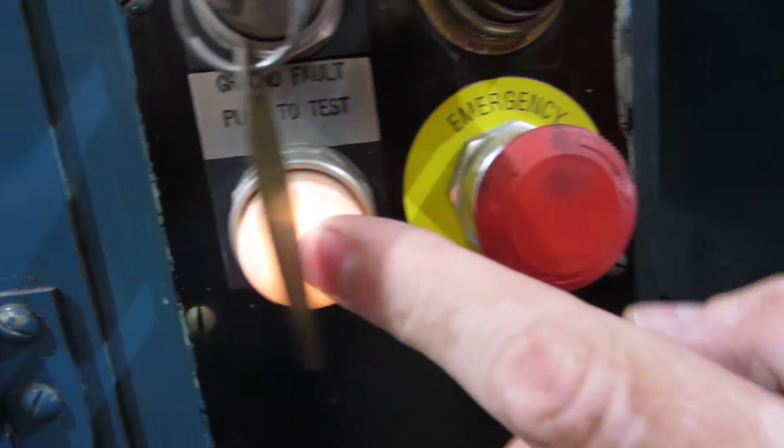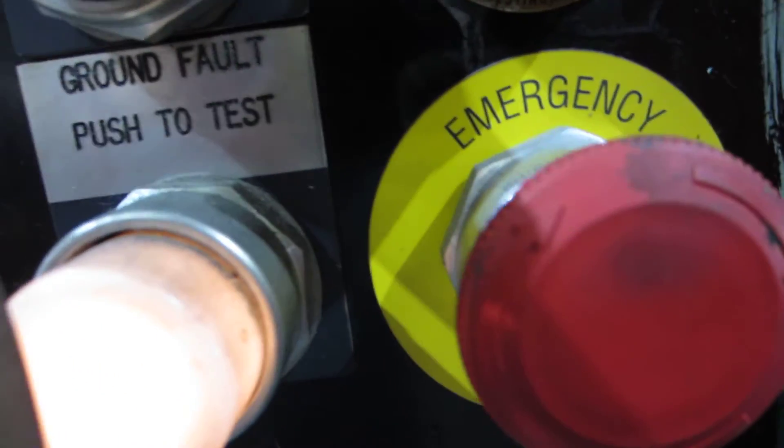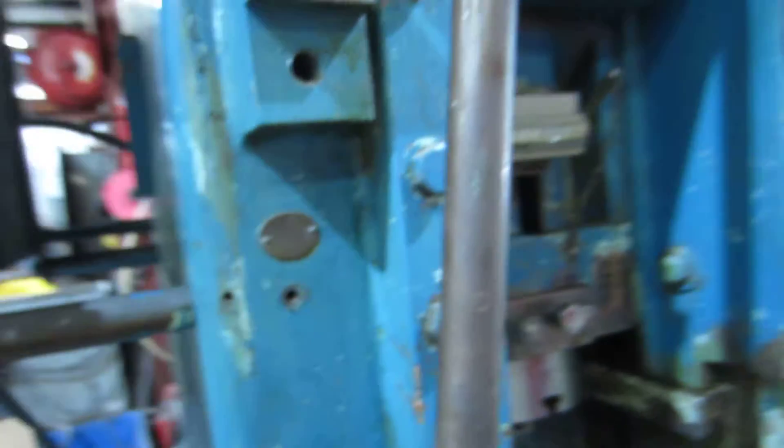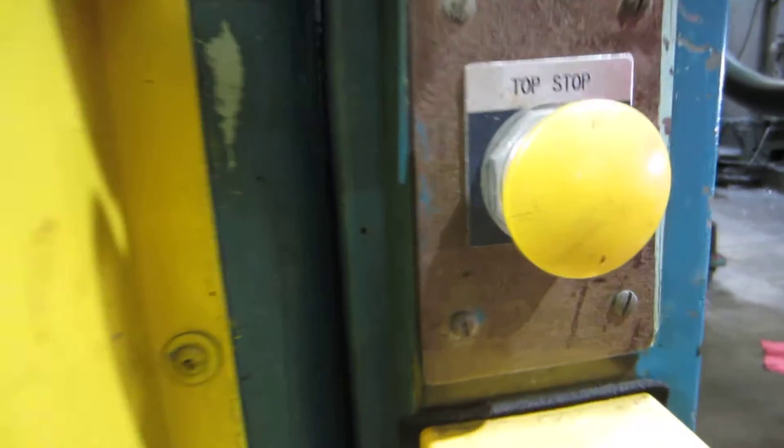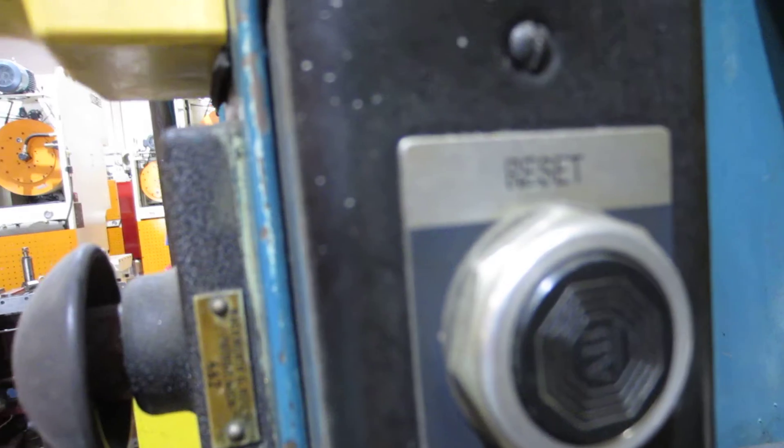There's a test fault for your ground indicator. That's all good. On this side here, you've got your run buttons with a top stop button and an e-stop button. And on the side here, you have your reset button as well as your continuous preset button.